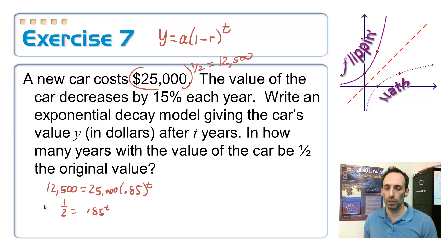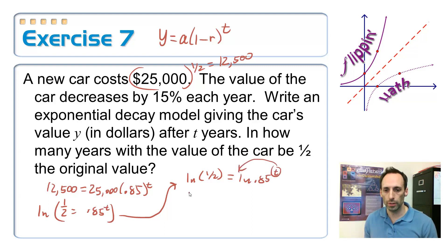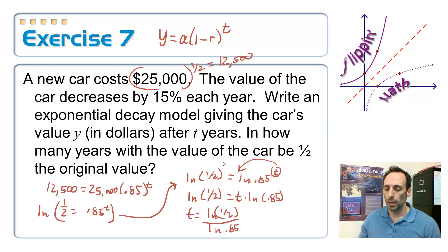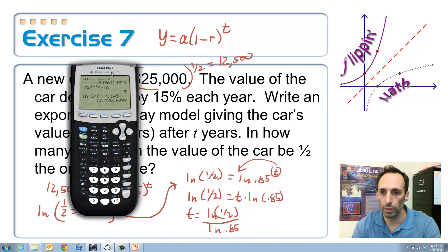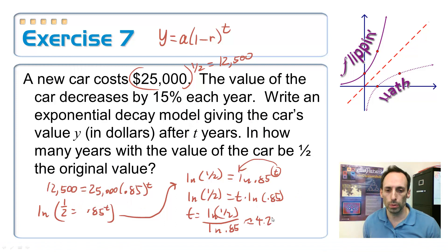Now it's an exponential equation — take the natural log of both sides. The natural log of 1/2 equals T times the natural log of 0.85. Dividing both sides gives T equals the natural log of 1/2 divided by the natural log of 0.85. In the calculator: natural log of (1 divided by 2), close parentheses, divided by natural log of 0.85. The result is approximately 4.27 years.